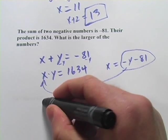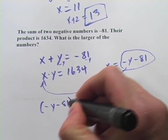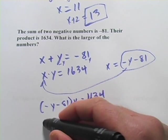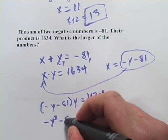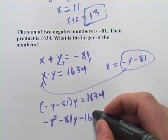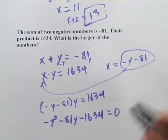So let's try that. We've got this comes out to negative y minus 81 times y equals 1634. So we would have a negative y squared minus 81y, after I multiply that y through. And then let's subtract the 1634. And there we go. There's our quadratic.